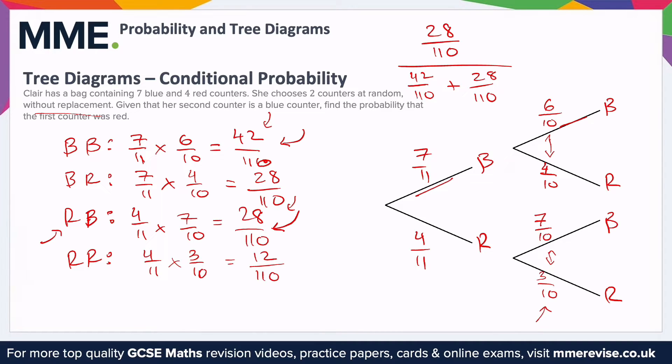Then from there, this is a difficult fraction to deal with without a calculator. However, everything's over 110, so we can simplify it down slightly, get 28 over 42 plus 28.